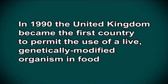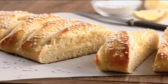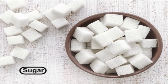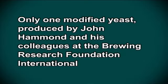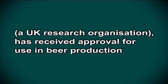Baking yeast: in 1990, the United Kingdom became the first country to permit the use of a live genetically modified organism in food. This was a special strain of baker's yeast engineered to make bread dough rise faster, with existing genes placed under stronger constitutive promoters helping the yeast break down the sugar maltose faster. Brewer's yeast: it has been over 20 years since the first research on genetic modification of brewing yeast and many strains have been developed; however, no brewers currently use genetically modified yeast commercially. Only one modified yeast produced by researchers at the Brewing Research Foundation International has received approval for use in beer production.